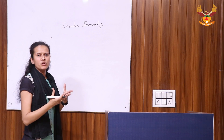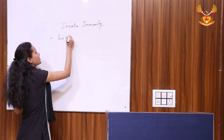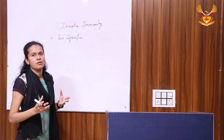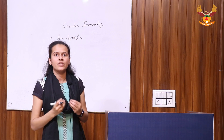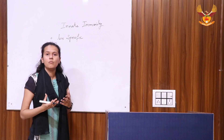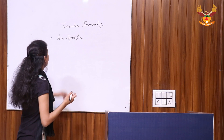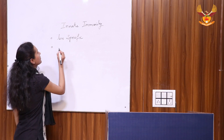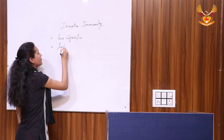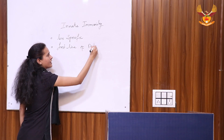Innate immunity is a less specific type of immunity, whereas other immunity is a more specific type of immunity. Innate immunity is also called the first line of defense.